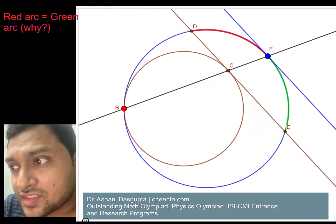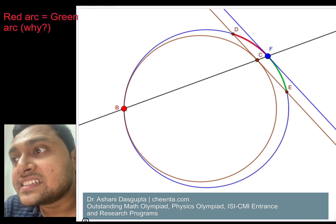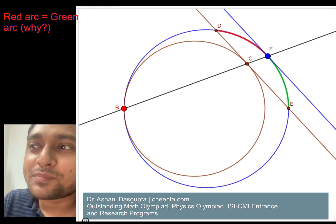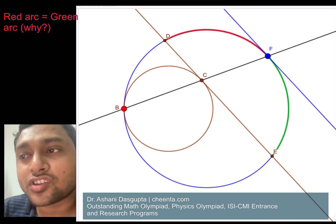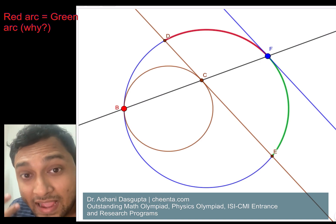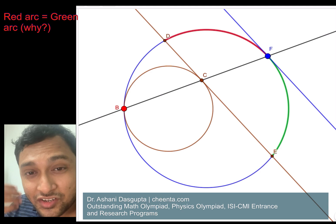Look how the red arc and the green arc are diminishing in size at sort of the same rate until D and E sort of jump on F. It's very important when you are doing geometry to have this dynamic intuition and visualization in your mind.